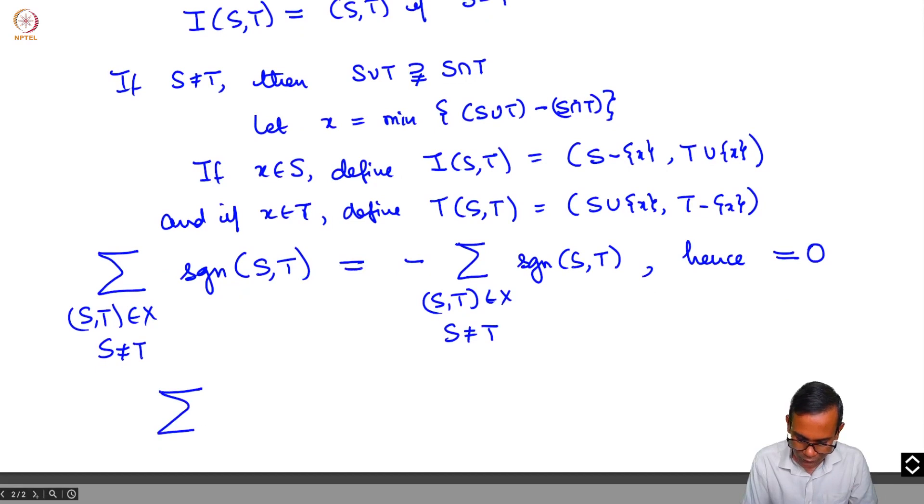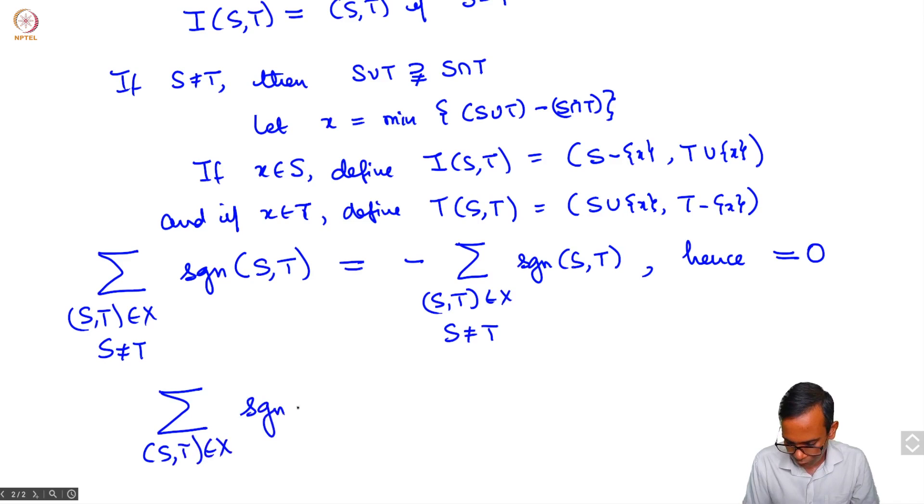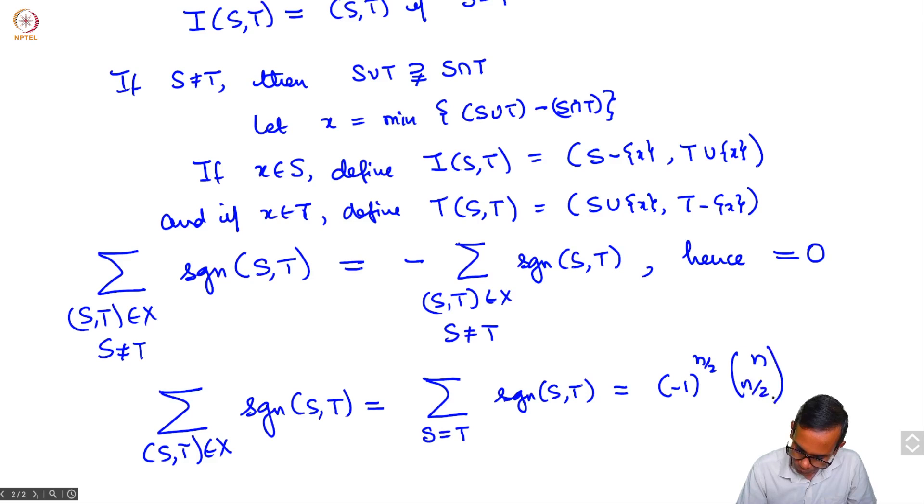What we get is that the sum that we wanted to compute, the sum over s,t in x of sign of s comma t, is only the sum over the fixed points of this involution I. It's the sum over cardinality of s equal to t of sign of s comma t. If s is equal to t, well s and t have complementary cardinality which means that the cardinality of s has to be equal to half of n. So s and t are the same set; if n is odd then there are no such sets, and if n is even this just gives us minus 1 raised to n by 2, n choose n by 2. If n is even, and it gives us 0 if n is odd.